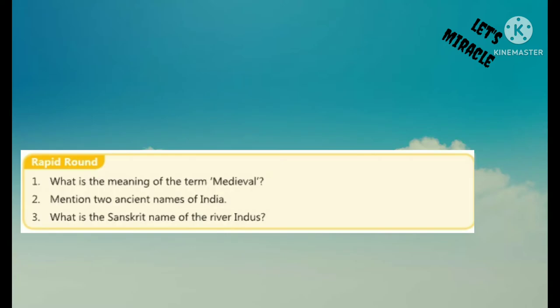Rapid round: What is the meaning of the term medieval? The term medieval is derived from the Latin word 'medium aevum', meaning related or belonging to the middle age. Ancient names of India include Bharatavarsha, Jambudwipa, Bharat, and also known as Hindu or Hindustan in the 11th century CE. What is the Sanskrit name of the river Indus? The Sanskrit name of the Indus is Sindhu.